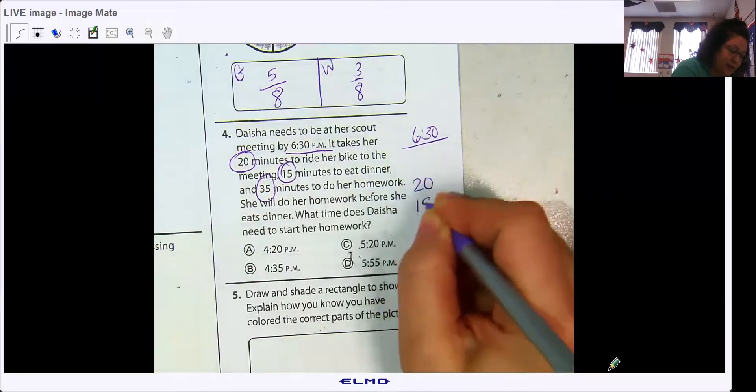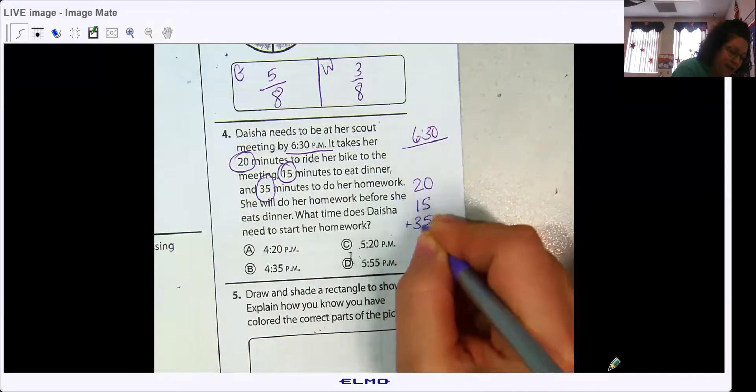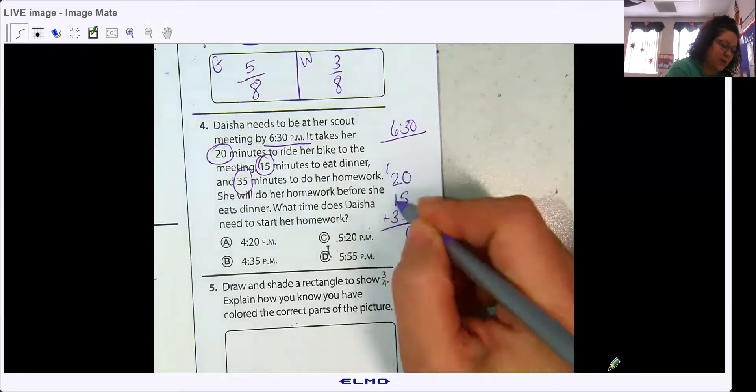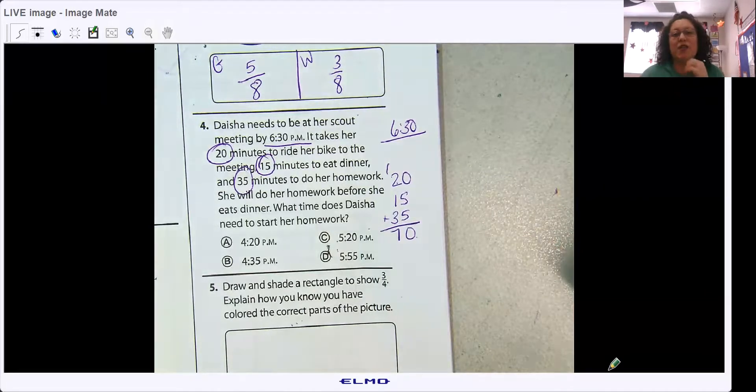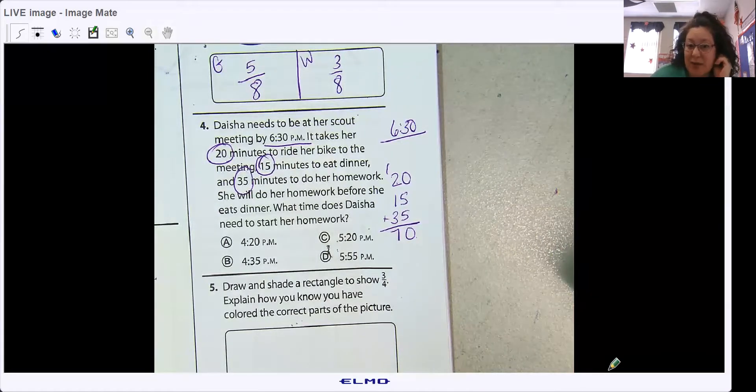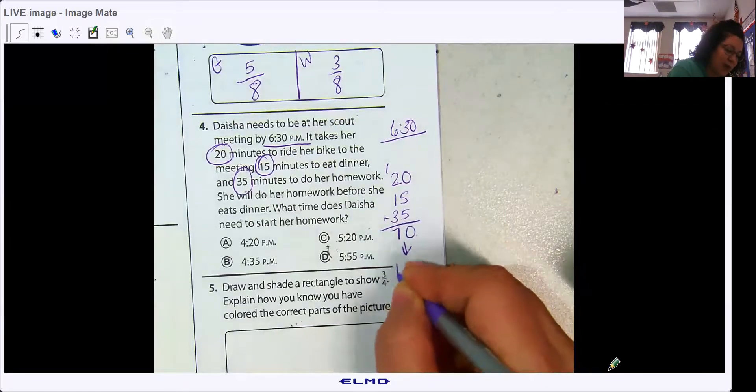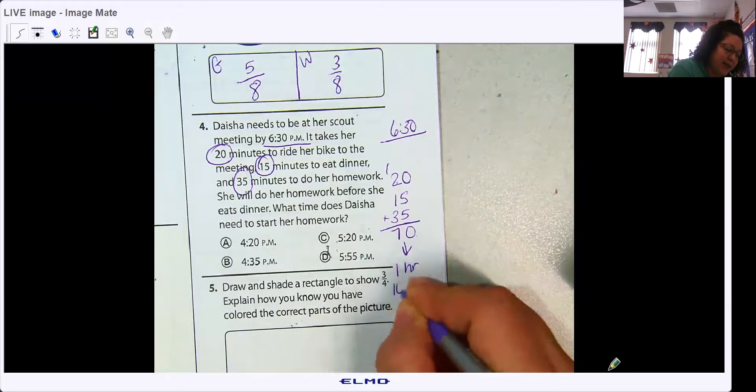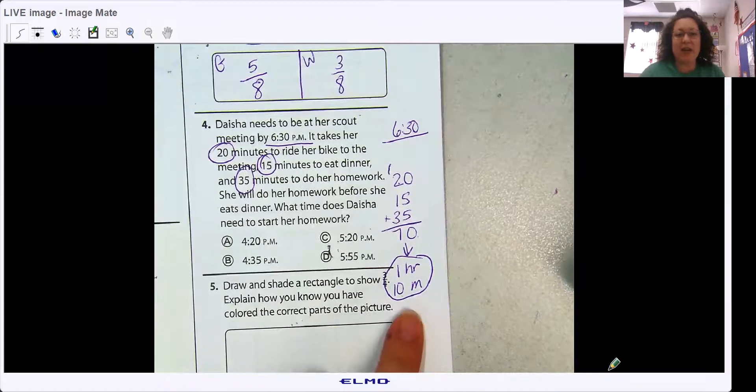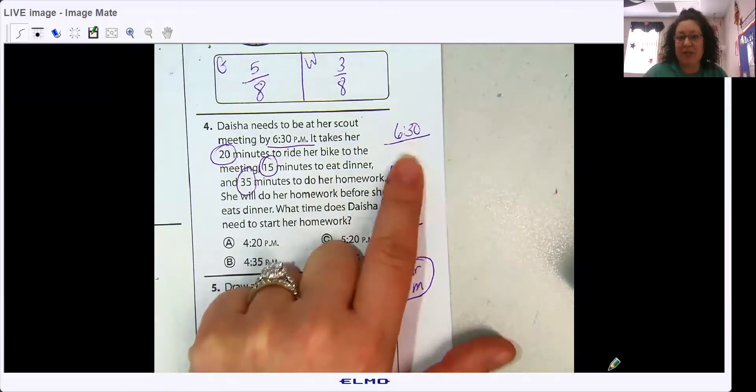We're going to add up our minutes to see how many minutes altogether she needs before. So we have 20, 15, and 35, right? So, 70 minutes. She's got 70 minutes that she needs to come back from. And I know 70 minutes is how many hours? 1 hour, because 1 hour is 60 minutes. So, that's 1 hour, and then 60 plus the 10. So, I need to go back 1 hour and 10 minutes from 6:30.